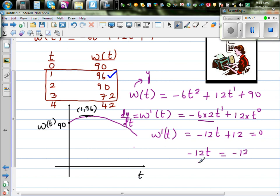So dividing both sides by -12, t = -12 divided by -12, which is one. So after one minute she reaches the maximum speed. And then it's dropping down.